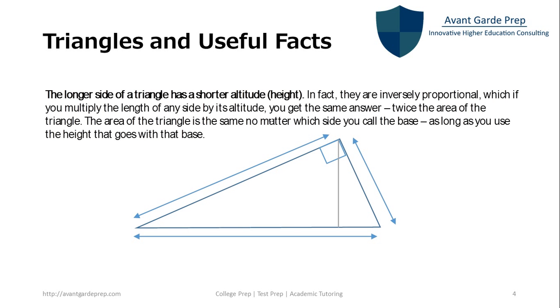When finding the area of a triangle, remember, the longer side has the smaller altitude or height. In the figure here, you can see the longest side has the shortest height, while the shortest side has the largest height. When you multiply the base times height, the result is always 2 times the area of the triangle. Just make sure you're using the correct base with the correct height.